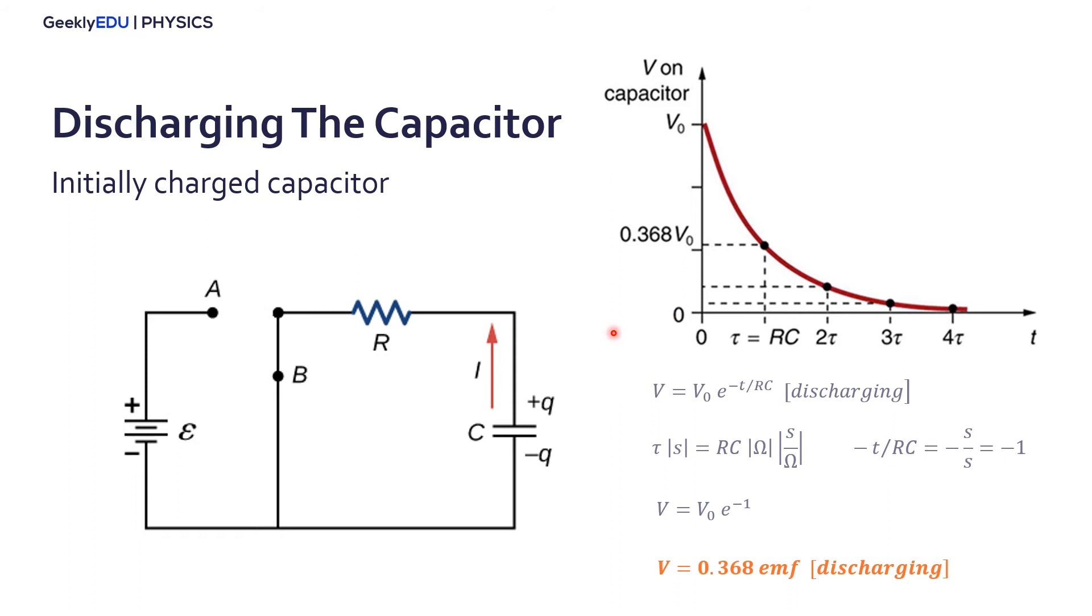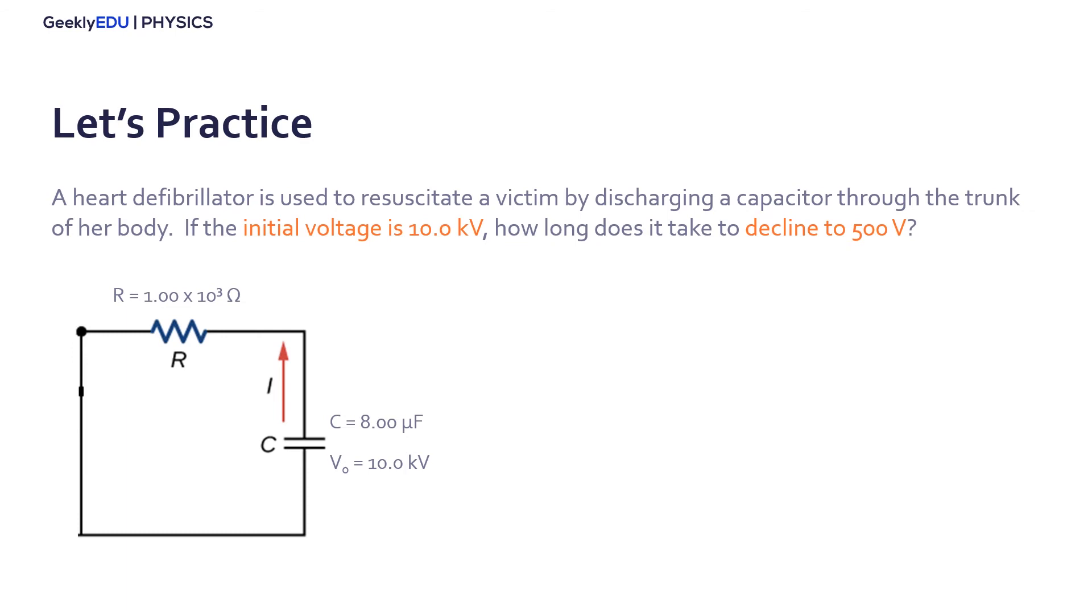Now that you learned the basics about RC circuits, let's put it to practice. Let's practice with this example here. We have a heart defibrillator that's used to resuscitate a victim by discharging a capacitor through the trunk of her body. The initial voltage is 10 kV. If the initial voltage is 10 kV, how long does it take to decline to 500 volts?